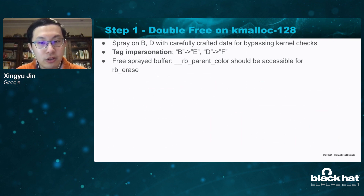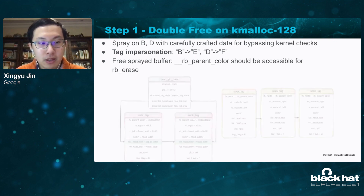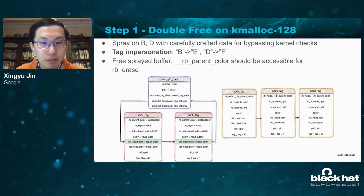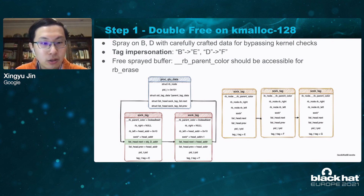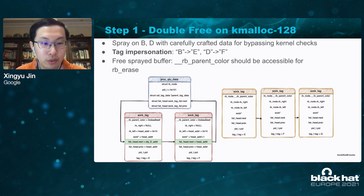To bypass the security checks, we spray the first two objects and do tag impersonation. The original tags are B and D, and now we overwrite the tags to E and F. Then overwrite the next list pointer to the list header node. We actually unlink soc_tag structures E, F, and G from the linked list so the module cleanup code will never see them in the soc_tag linked list.